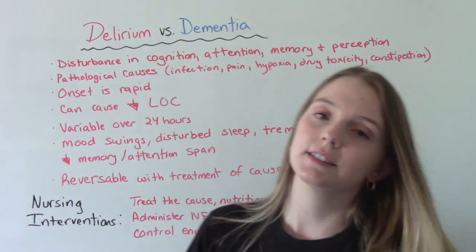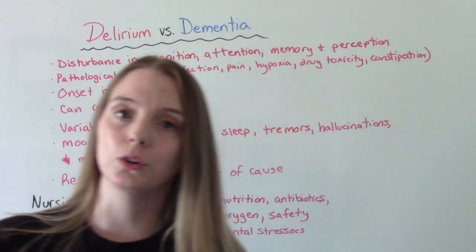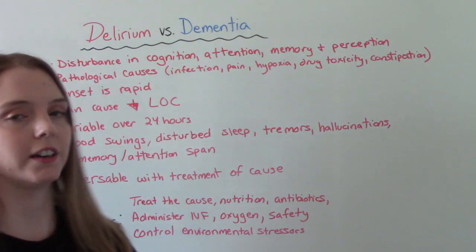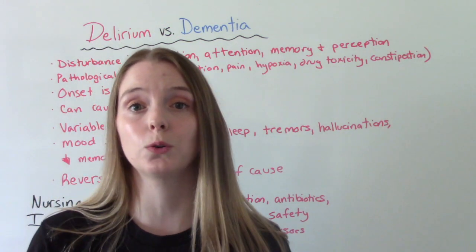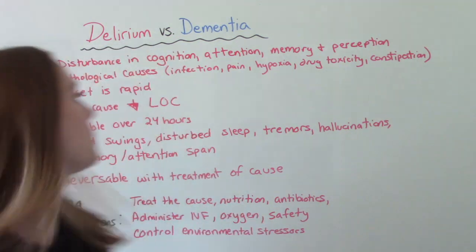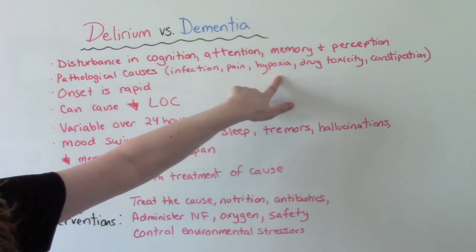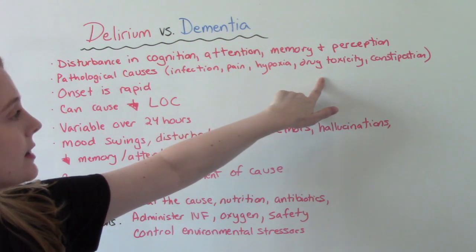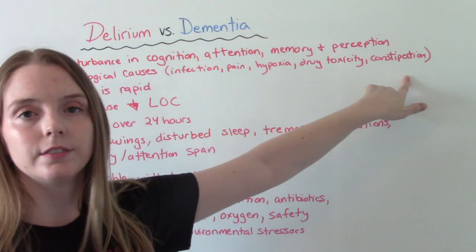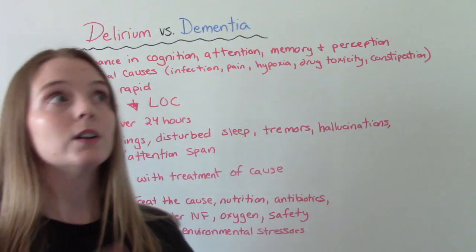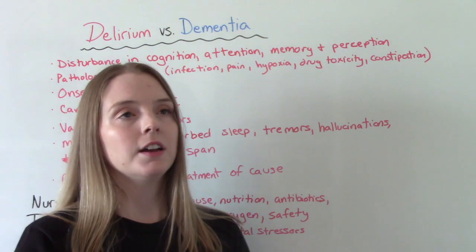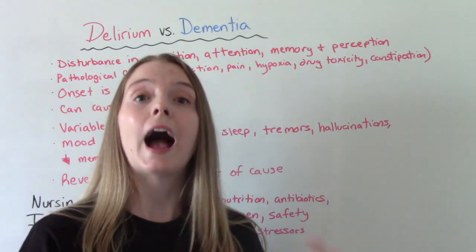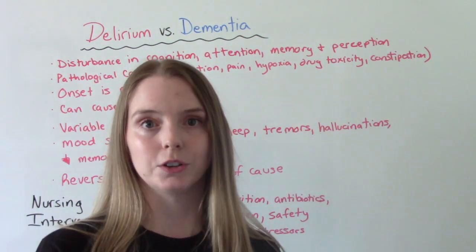Delirium has a pathological cause — things like infection, like a UTI or a respiratory infection, pain, hypoxia, drug toxicity, and constipation. Some of these things are not unique to the older adult, but are more common in the older adult.